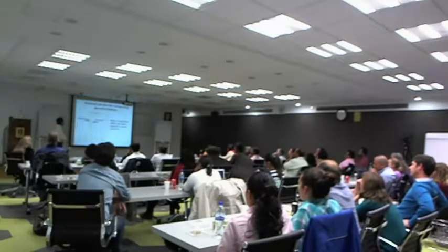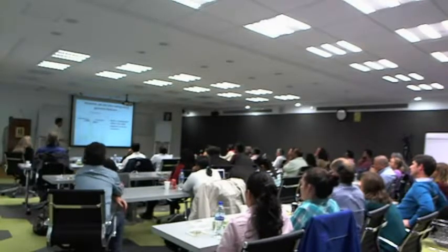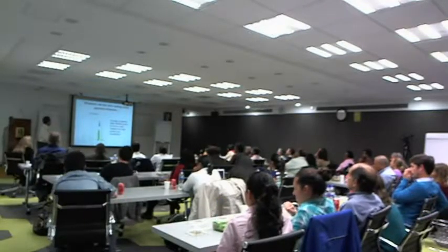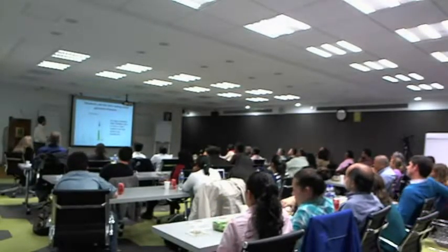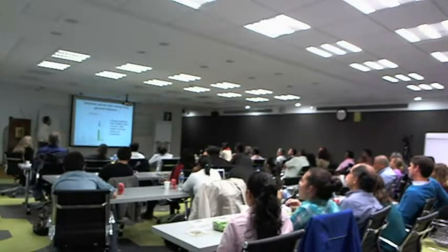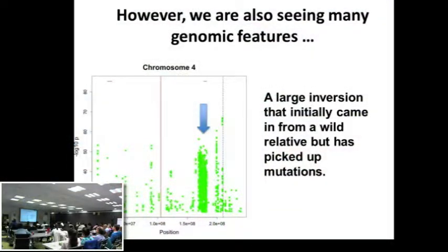Alberta identified an inversion on chromosome 3 — a big GWAS hit there. A couple years ago, Jeff Ross-Ibarra and other groups identified a big inversion on chromosome 4, and there's a big GWAS hit there too. This inversion comes from Mexicana and is probably adapted for some upland adaptations.